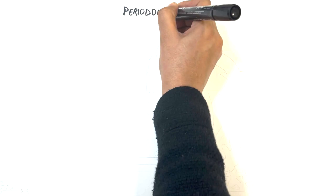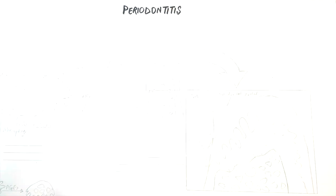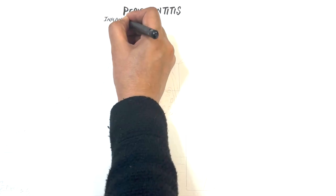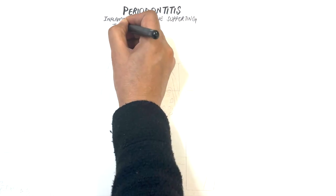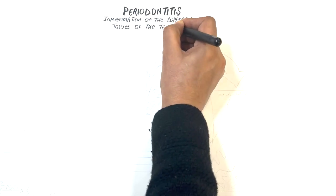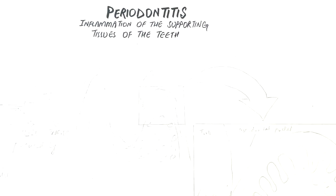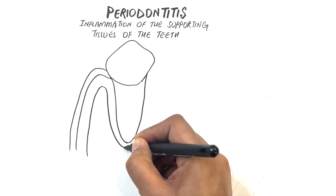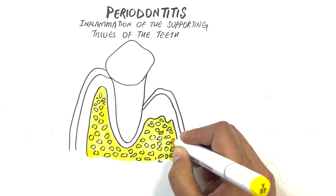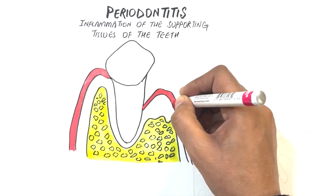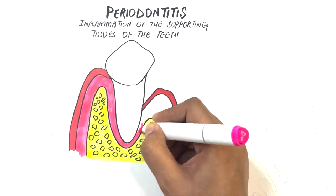Periodontitis, which is an inflammation of the supporting tissues of the teeth, is a disease originating from the gingival tissue which, if left untreated, results in penetration of inflammation to the deeper tissues causing bone resorption and eventually tooth loss.